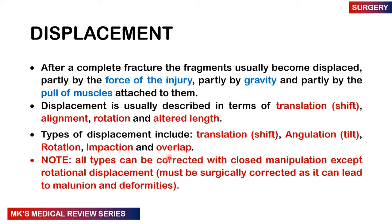When a fracture happens there is an element of displacement that may occur. After a complete fracture, fragments become displaced because of the force of injury, gravity, or the pull of certain muscles. Displacement is described in terms of translation (also referred to as shift), alignment, rotation, and length. Types of displacement include translation or shift, angulation or tilt, rotation, impaction, and overlap. All types of displacement can be corrected with manual closed manipulation except rotational displacement, which generally requires surgery.